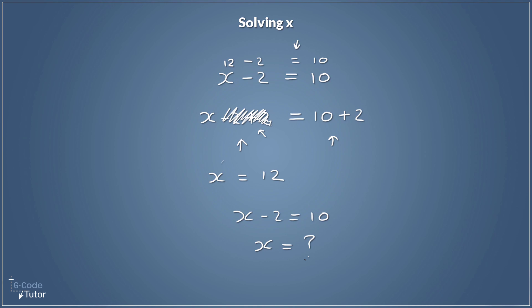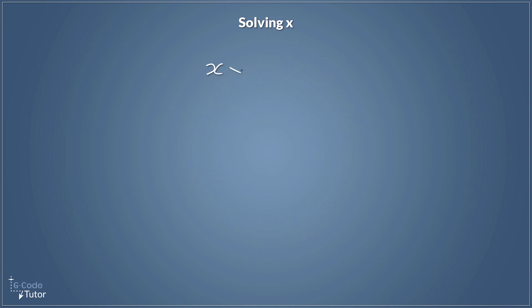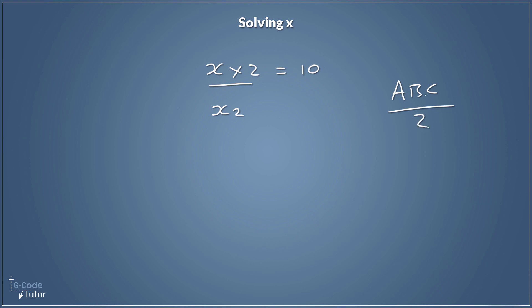Let's look at x times 2 equals 10. Notice the way x and the times symbol are drawn differently — that's the standard convention so we don't get confused. It's also good to note we wouldn't normally write it with a times symbol; instead we'd write x2, because whenever you see two values next to each other like this, they're multiplied together. So if we see something like abc divided by 2, a times b times c are all multiplied. So how do we get x on its own when we're multiplying?